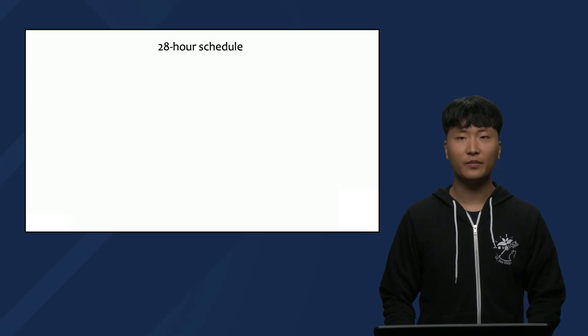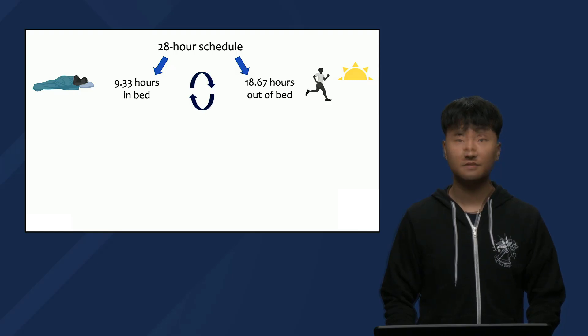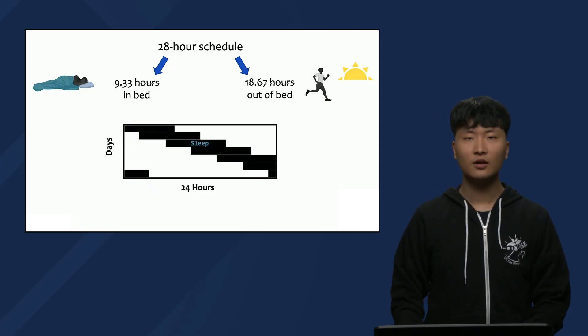The schedule in this study required participants to be on a 28-hour day. This protocol allows the researchers to examine both Process C and Process S by analyzing the data in different ways. In every 28-hour day, there was a 9.33-hour sleep opportunity in bed in darkness, followed by 18.67 hours out of bed in dim light. Participants could sleep enough that sleep pressure or Process S is not accumulating much across the study period. But 28 hours is too long of a day for the human circadian clock to entrain to.